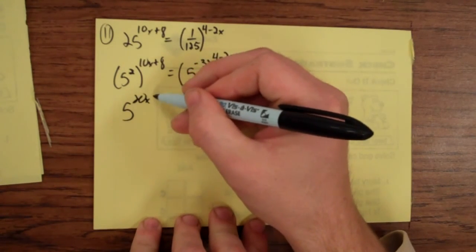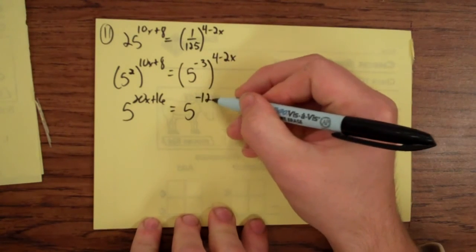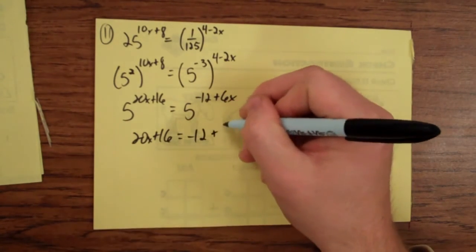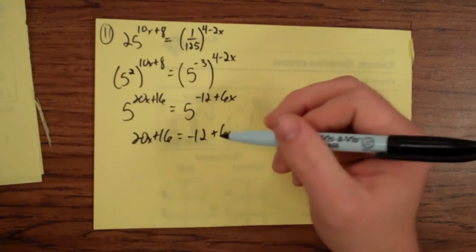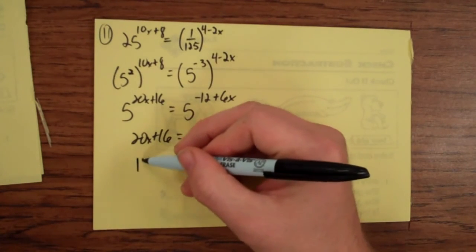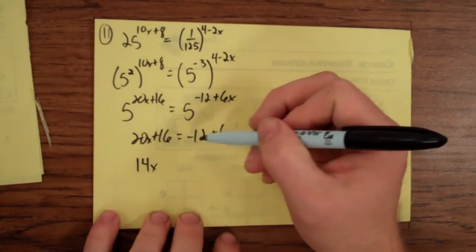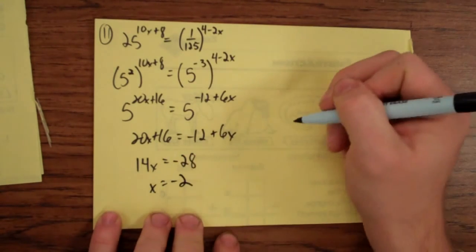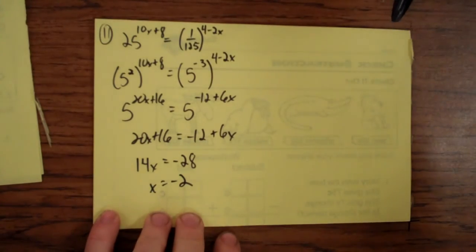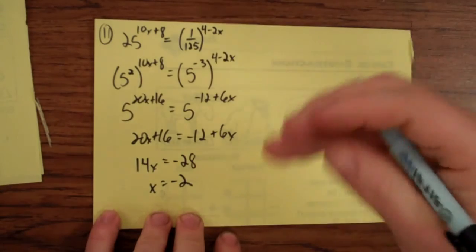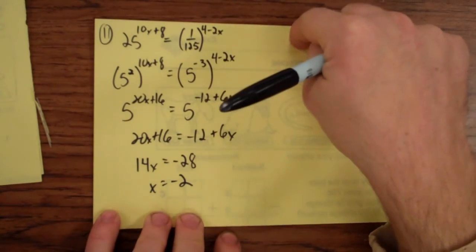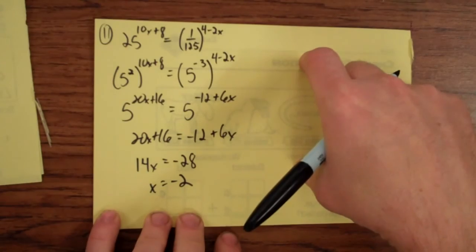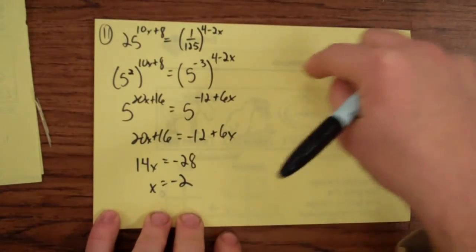Alright, so 5 to the 20x plus 16 equals 5 to the negative 12 plus 6x. So 20x plus 16 equals negative 12 plus 6x. And then solve for x. I'm going to take 6x over here, I'll get 14x. And let's subtract 16 from both sides. You get negative 28, so x equals negative 2. Alright, fantastic. Now in your books, you're going to go to the next set of problems, and it's not going to look like the problems I'm about to do. Because I group these kinds of problems with the next set of problems, which is 24 to 31, where we have the same base of exponents, and now we're going to work with the same base of logs.